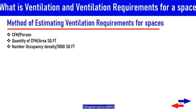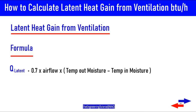The three methods for calculating ventilation requirements are: the first method involves multiplying the number of people in the space by the quantity of CFM per person; the second method involves multiplying the area in square feet by the CFM per square foot rate; and the third method involves multiplying the occupancy density per 1000 square feet. In these examples, the latent heat gain from ventilation is calculated using the same equation as for infiltration.